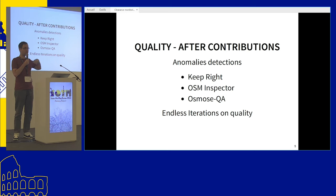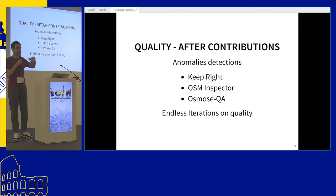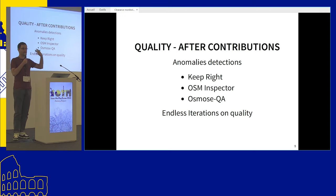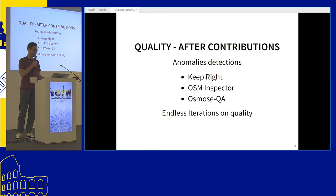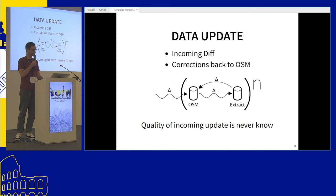The other solution is to validate data once they are in OpenStreetMap. To do this, there are tools like Keepright, OSM Inspector, and Osmose QA. The issue with these tools is an endless iteration of quality: you see an issue, you fix it, and at the same time other contributors change the data. So you never know the current quality of the data in OSM — you are always improving but never certain of what is actually there.